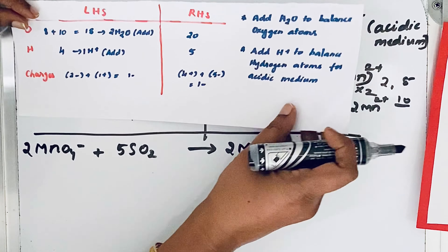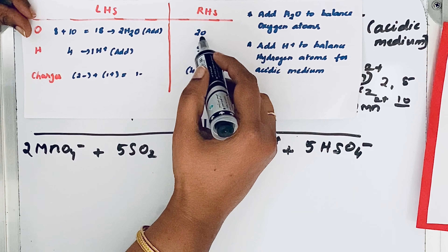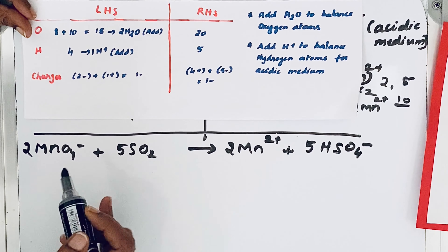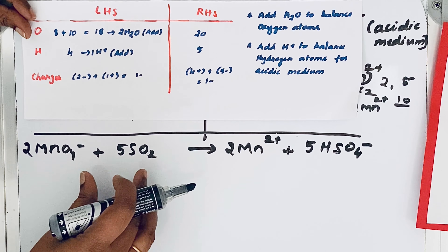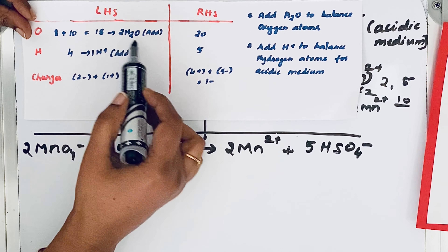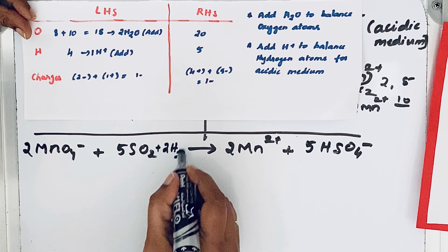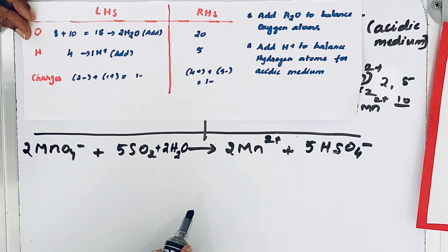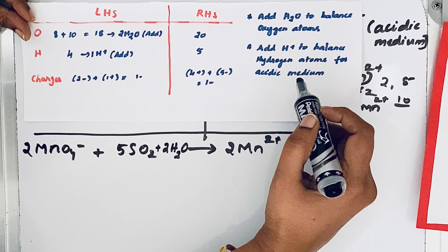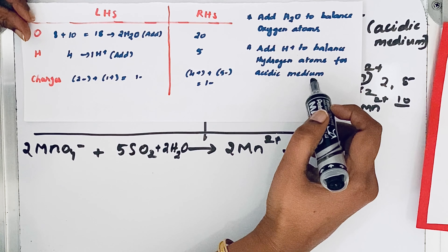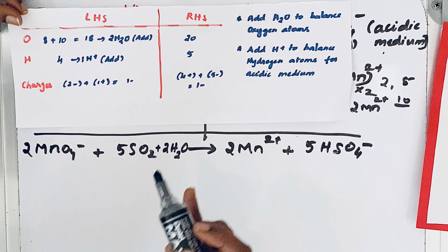On the right-hand side there are 20 oxygen atoms (from 5HSO4⁻). So 2 oxygen atoms are fewer on the left-hand side. To balance the oxygen atoms, we add 2H2O to the left-hand side. Now the oxygen atoms are equal. Next, to balance hydrogen atoms, we add H⁺ since this reaction is carried out in acidic medium.